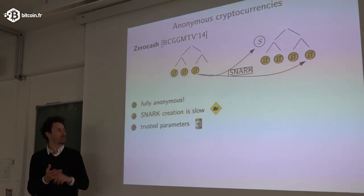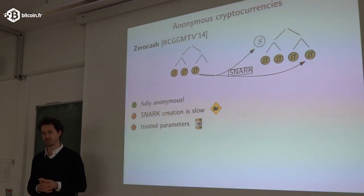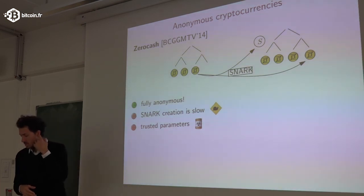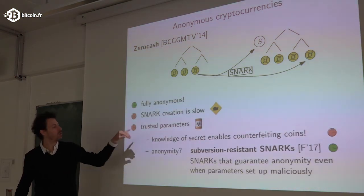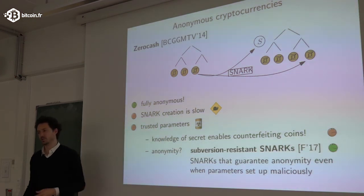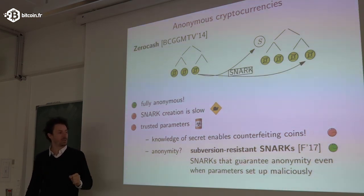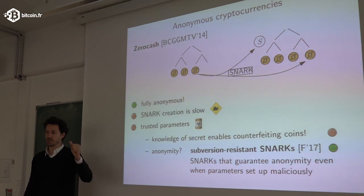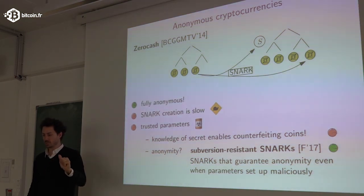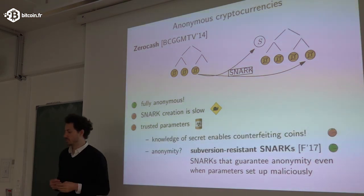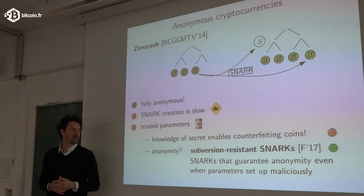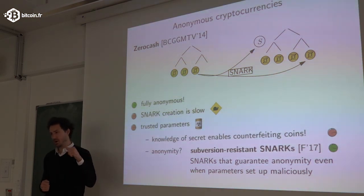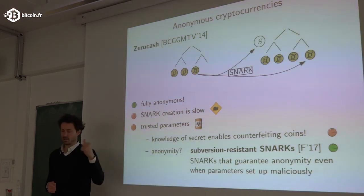The drawbacks are that Zcash is slow — SNARK creation takes about two minutes on a PC — and there is the trusted parameters problem. The Zcash team admits that if you know the secret used to create the parameters, you can counterfeit coins. However, by tweaking the SNARKs slightly at negligible cost, you can show that even if the SNARK parameters were set up maliciously, anonymity and zero-knowledge are still guaranteed.